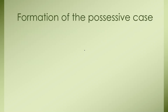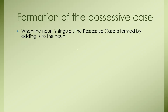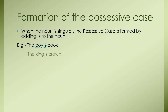Formation of the Possessive Case. When the noun is singular, the possessive case is formed by adding apostrophe and S to the noun. For example, 'the boy's book' — here we show possession by adding an apostrophe and S to the singular noun 'boy'. Another example: 'the king's crown'.